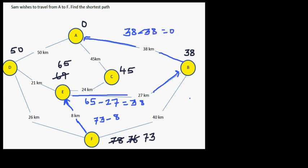So the shortest path is from A. From A, he goes to B, and from B he goes to E, and from E he goes to F. And the total distance he covers, the shortest distance that he covers is 73 kilometers. So the shortest path to travel from A to F is from A to B, then B to E, and E to F.